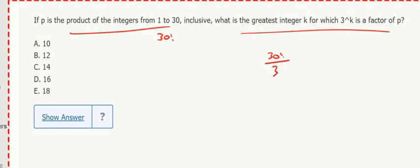So 30 factorial, 3 to the what goes into it? What's the maximum possible value of k? I'm asking how many 3's are in k? How many 3's are in 30 factorial, which is p?